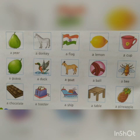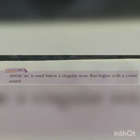First example is 'an axe'. The spelling of axe is A-X-E. The starting letter of axe is A. A is a vowel sound. So we will have to write 'an axe'. An orange. The spelling of orange is O-R-A-N-G-E. The starting letter of orange is O, and O is also a vowel sound. So here also we will write 'an orange'.